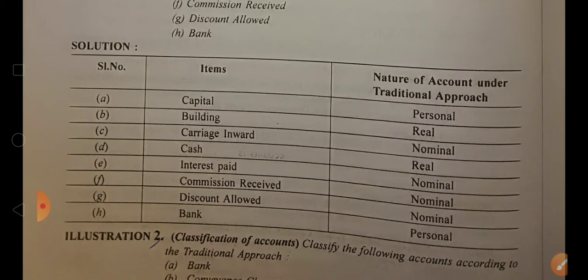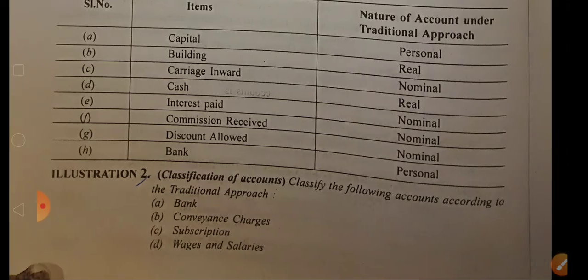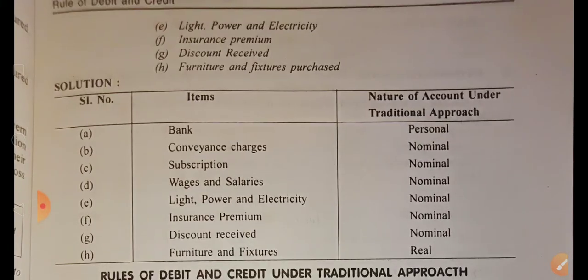Bank is an artificial organization — a personal account. But bank balance is an asset. In a normal case, bank is treated as a personal account. Charges, subscription, wages and salary — simply these are expenses and losses. Income and gains are all nominal accounts. Assets like building and machinery are all real accounts — what comes in and goes out.